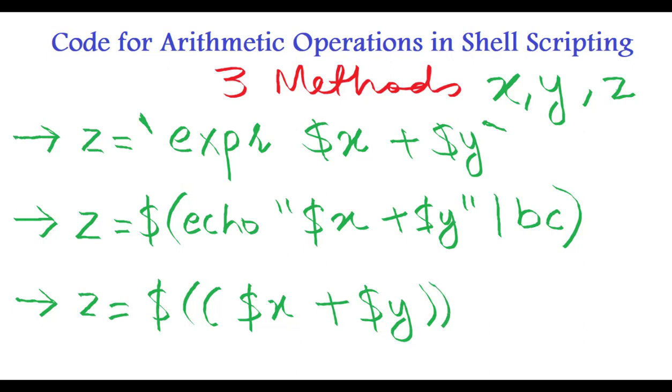So these are the three methods and in my opinion the best method among all these three is this one using bench calculator. Although the last one seems more simpler, I'm calling this one as the best method in my opinion. Let's see why is that. Let's write some code and run it in the shell and let's see for ourselves why am I considering this method as the best method.